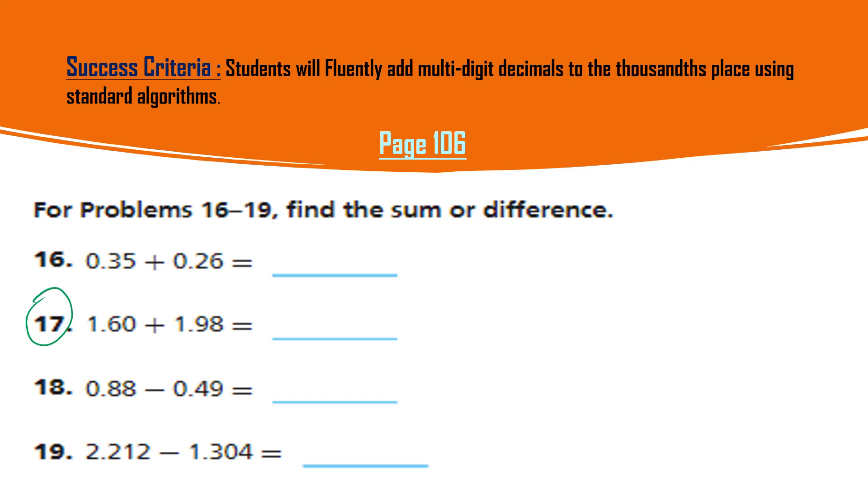1.60, I write here 1.60. 1.98, under the point I write the point, and then I write 9.8 here and 1 here. What we have to do? We have to add it. 0 plus 8 is 8. 9 plus 6 or 6 plus 9 is 15, so we write the 5 down and 1 carry. Point, point, point. 1 plus 1 plus 1 gives us 3, so it will give us 3.58. That is our answer.